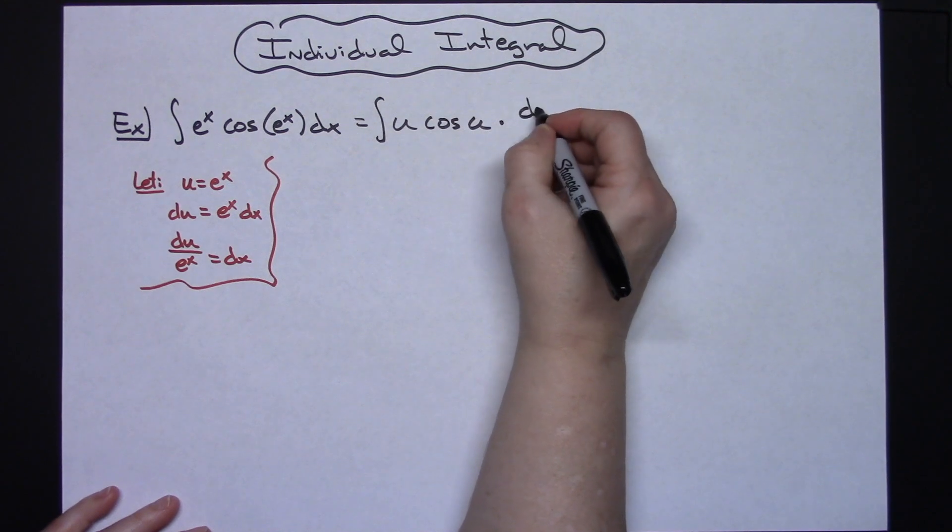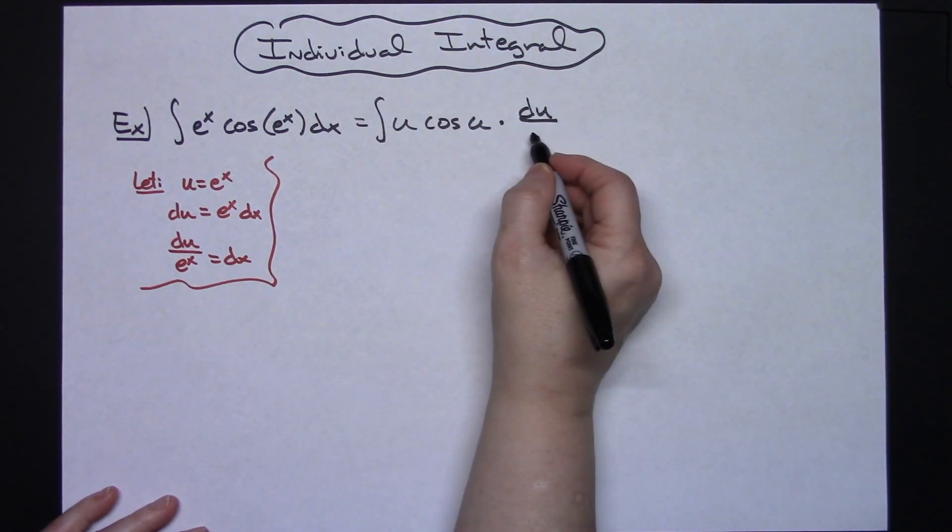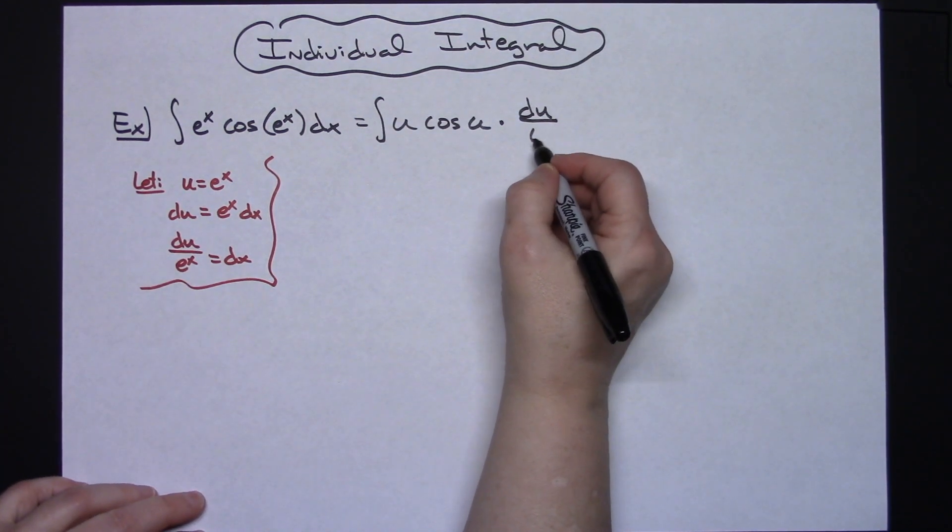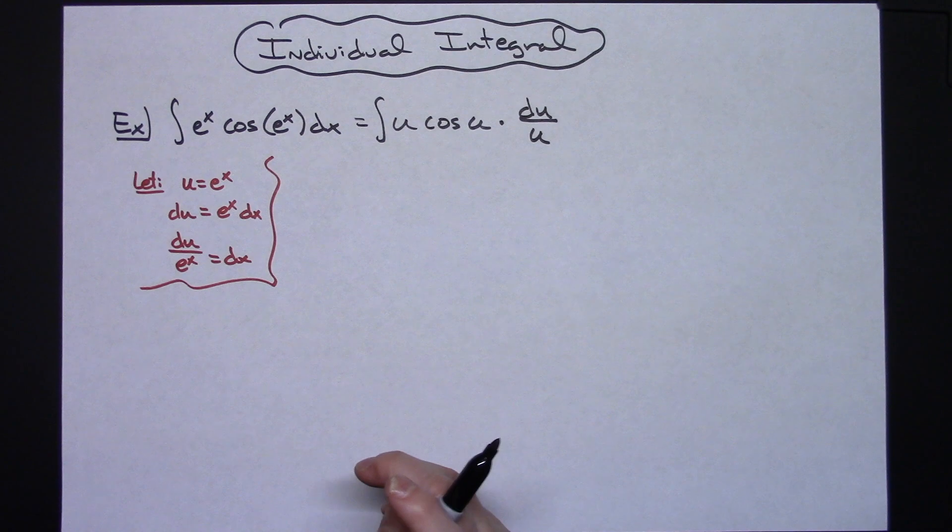But then when I go to write that, if I write e to the x here I'm still going to have an e to the x left over, but we originally said e to the x is a u, so I'm going to go ahead and replace that with a u all in that first step right there.